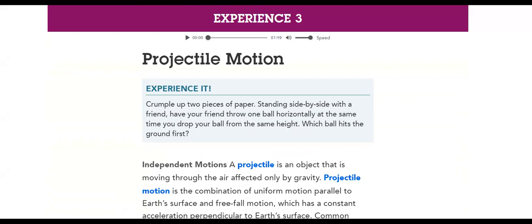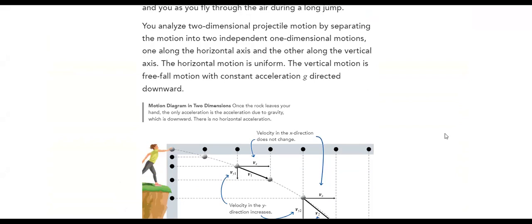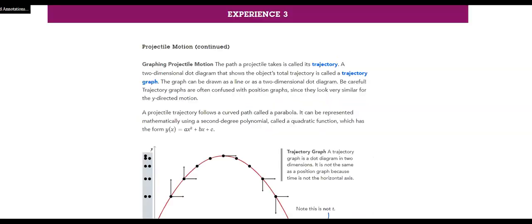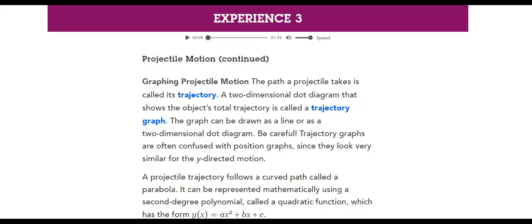So a projectile is an object that is moving through the air, affected only by gravity. We will have many terminologies to define. Here is an example of a lady who's standing at the top of a cliff and throwing a ball, and then we are resolving the vector components at each time it's taking.